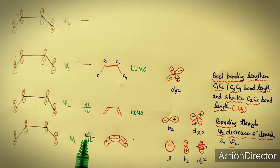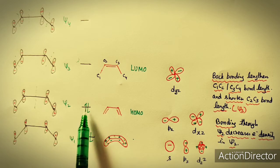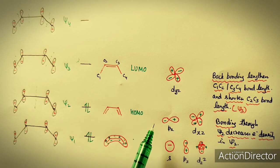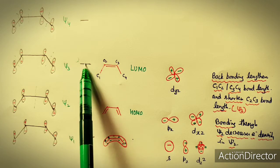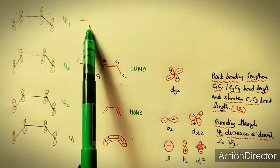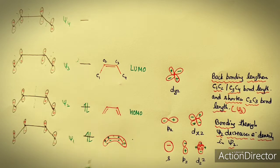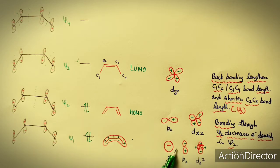Bond formation: psi 1 and psi 2 are filled, so the ligand can donate electron pairs to the metal through sigma bonding. The empty antibonding orbitals psi 3 and psi 4 can accept electrons from the metal center, enabling back bonding. The metal searches for orbitals of matching symmetry: the s orbital and dz² have the same symmetry as psi 1 and can overlap in a head-on fashion.